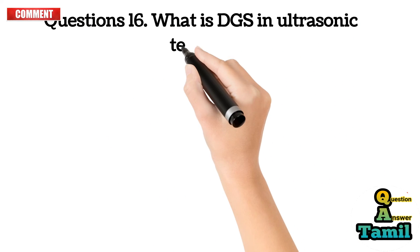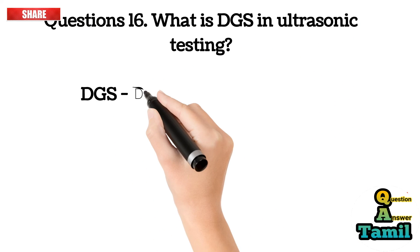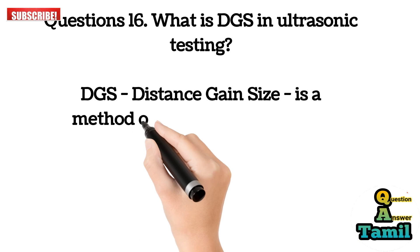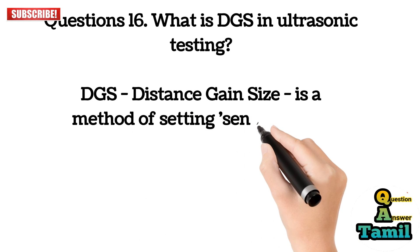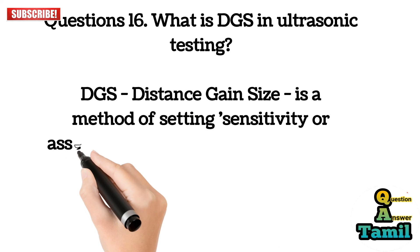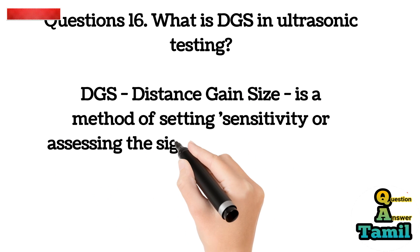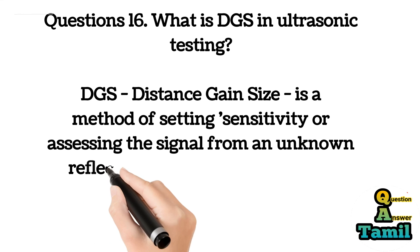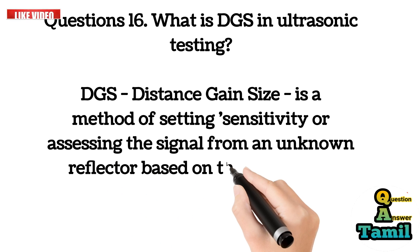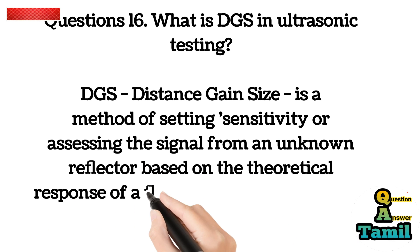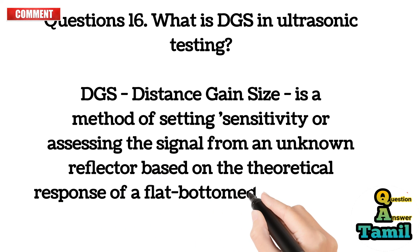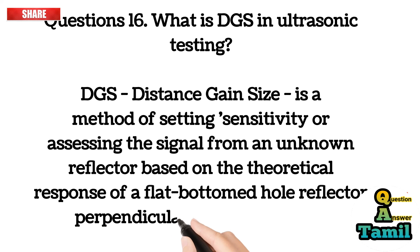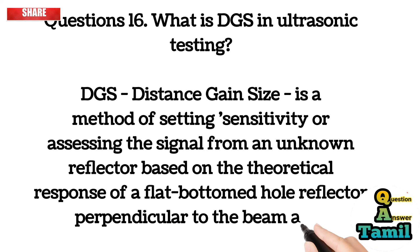Question 16: What is DGS in ultrasonic testing? DGS — Distance Gain Size — is a method of setting sensitivity or assessing the signal from an unknown reflector, based on the theoretical response of a flat-bottomed hole reflector perpendicular to the beam axis.